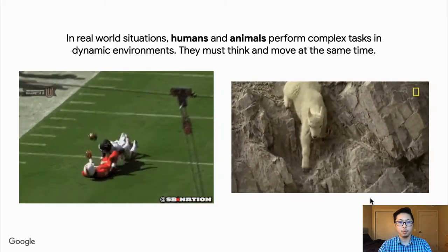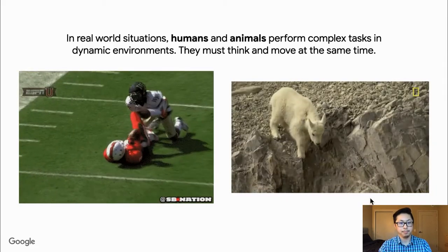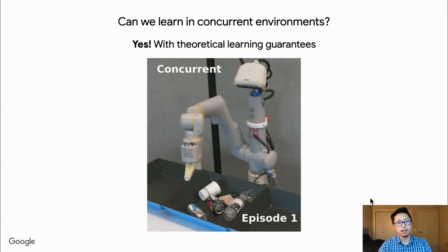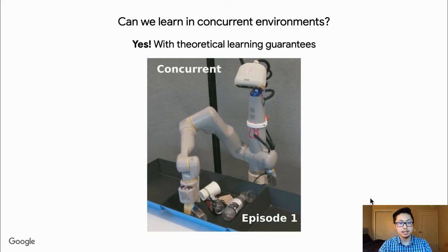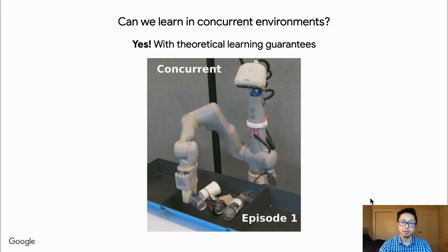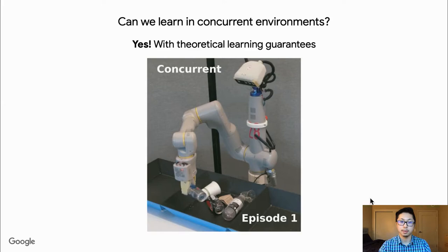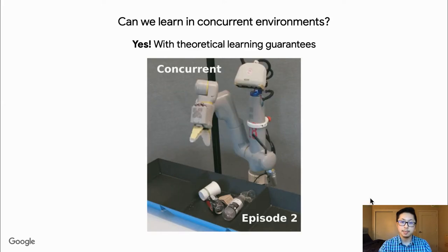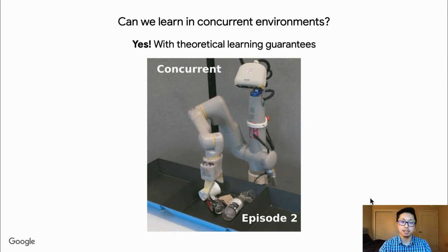Instead, we must think while moving. In concurrent environments like the real world, the external environment continues to evolve even as our agent is thinking. Agents that can operate in such settings would not only be faster and smoother than their blocking counterparts, but also able to perform a wider variety of dynamic tasks that simply aren't feasible in a blocking setting.